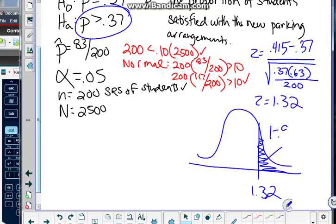So what's 1 minus 0.9066? We get our p value. 1 minus 0.9066 is going to give us 0.0934.